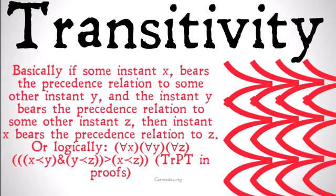Let's take a look at that in logical terms. If some instant x bears the precedence relation to some other instant y — x is before y — and that instant y bears the precedence relation to some other instant z — y is before z — then the instant x bears the precedence relation to z, or x must be before z. To put that logically: for all x, all y, and all z, x is before y and y is before z implies that x is before z. We'll represent that as TRPT in proofs.